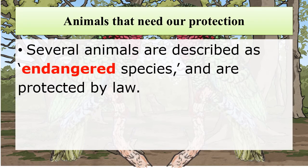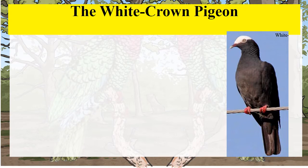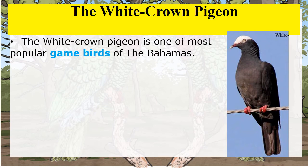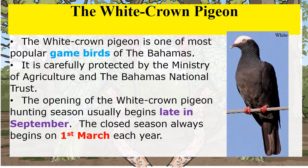Animals that need our protection. Several animals are described as endangered species and are protected by law. The White Crown Pigeon is one of the most popular game birds of the Bahamas. It is carefully protected by the Ministry of Agriculture and the Bahamas National Trust. The opening of the White Crown Pigeon hunting season usually begins late in September, and the closed season always begins on the 1st of March each year.